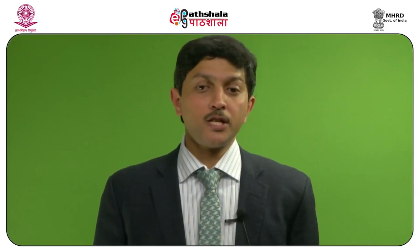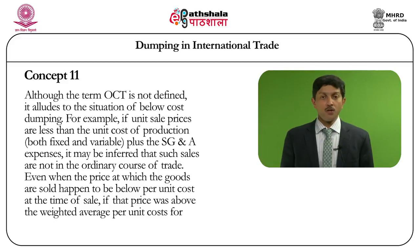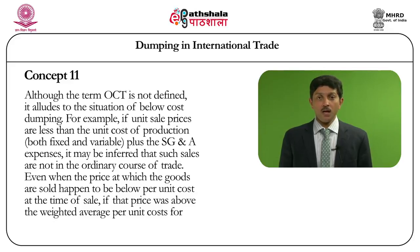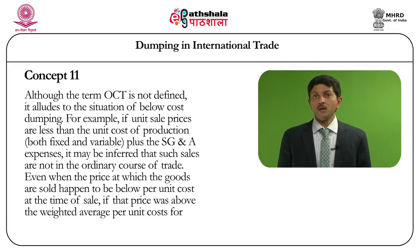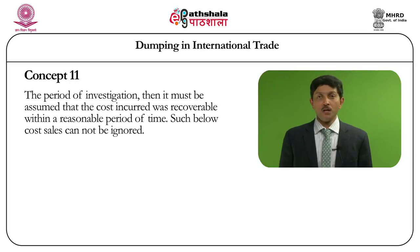The Anti-Dumping Agreement does not define the term 'ordinary course of trade.' Although the term ordinary course of trade (OCT) is not defined, it alludes to the situation of below-cost dumping. For example, if the unit price of a particular product is less than the unit cost of production, which includes both the fixed and the variable cost and a certain amount of selling, general, and administrative expenses, it may be inferred that such sales are not in the ordinary course of trade. Even when goods are sold below unit cost at the time of sale, if that price was above the weighted average per unit cost of production for the period of investigation, then it must be assumed that the cost incurred was recoverable within a reasonable period of time. Such below-cost sales cannot be ignored.